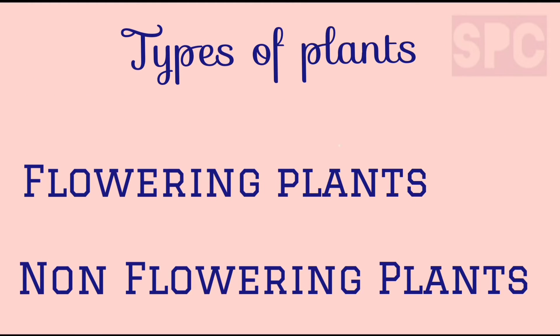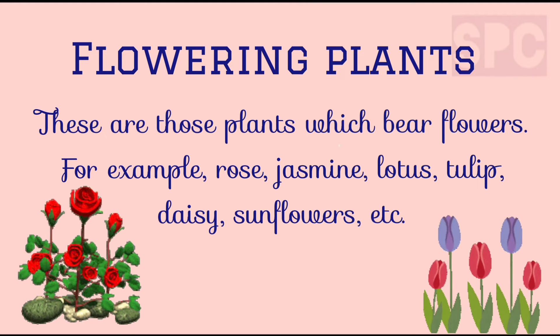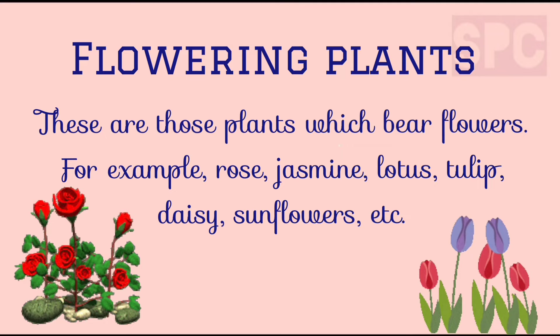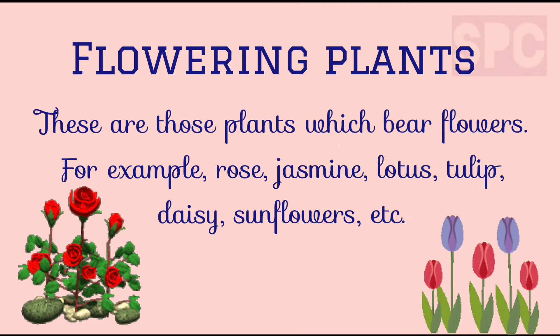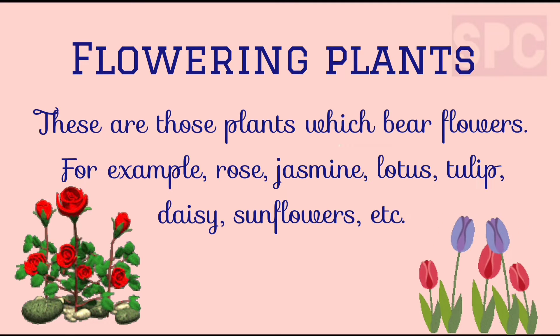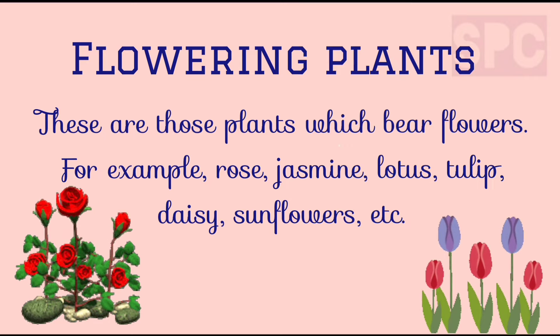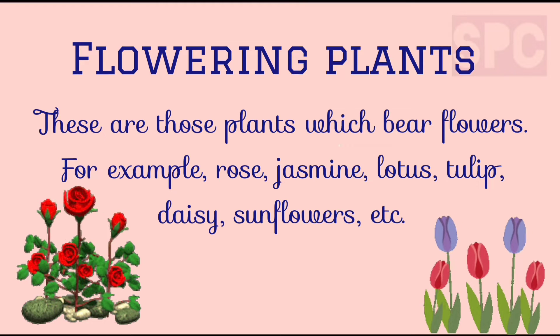Plants can be mainly divided into two main categories: flowering plants and non-flowering plants. Flowering plants are those plants which bear flowers, for example rose, jasmine, lotus, tulip, etc.